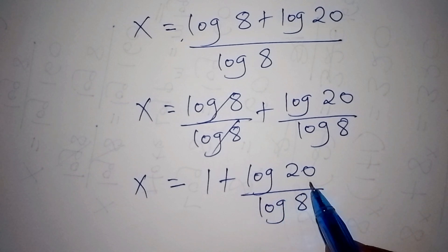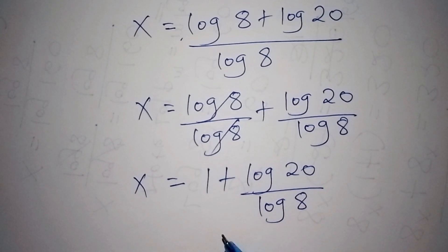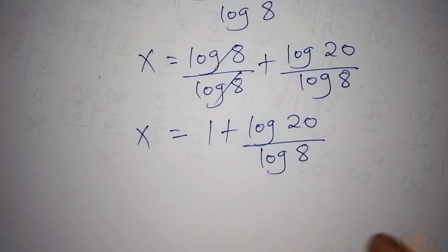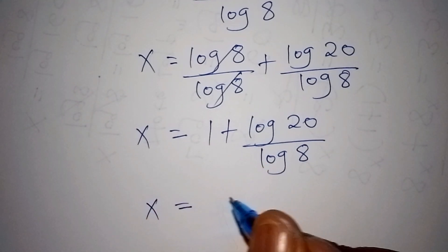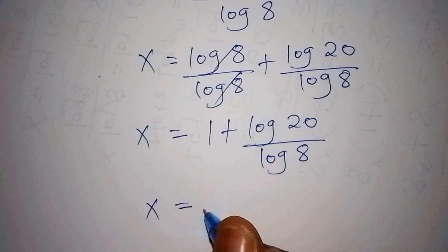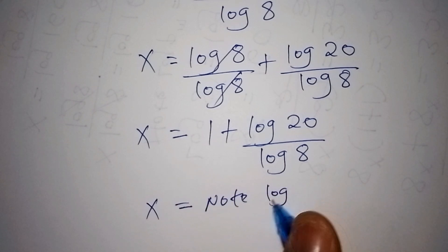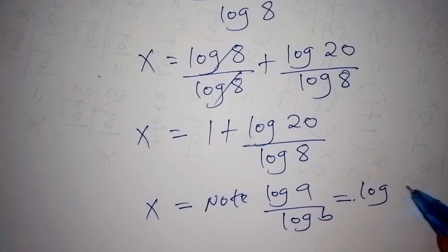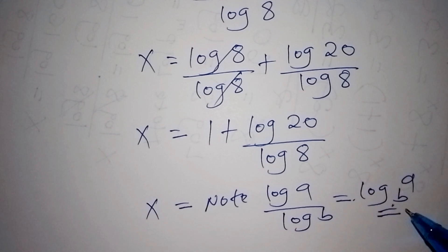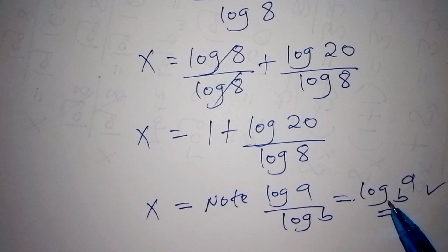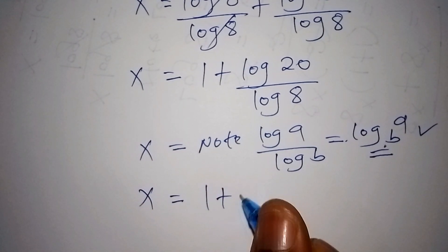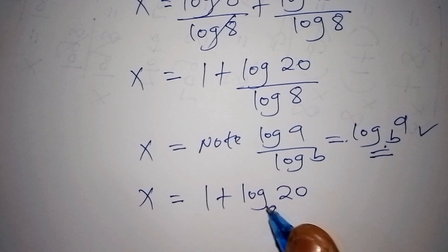We can factorize log(20) further or leave it as is. Note that log(8) over log(8) can be written as log base 8 of 8, which equals 1. Similarly, log(20) over log(8) can be expressed as log base 8 of 20. So now our x equals 1 plus log base 8 of 20.